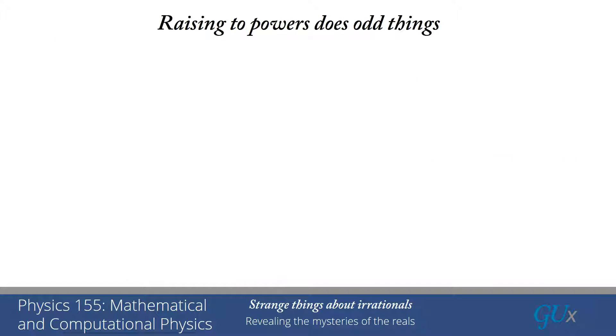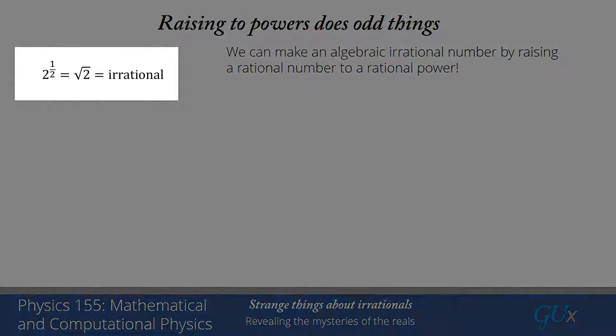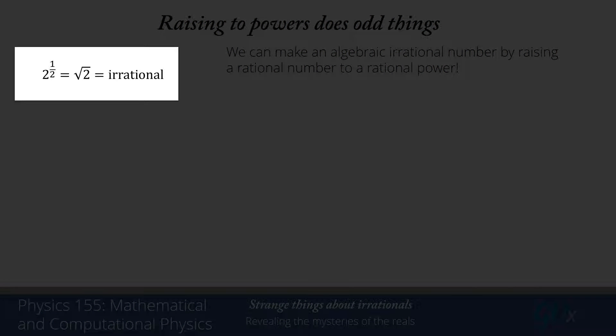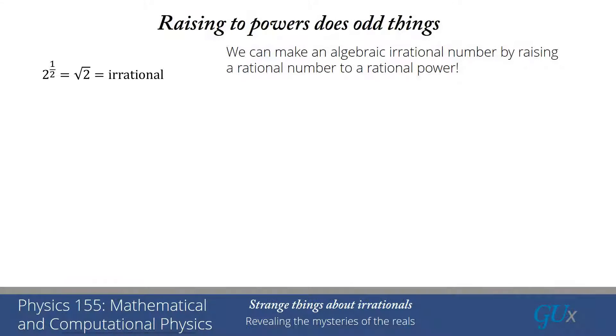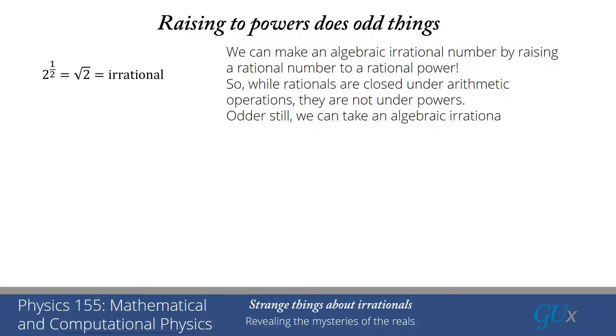Our next step is looking at what happens when we raise numbers to powers, because they tend to do odd things. We can take the rational numbers and create algebraic irrational numbers by raising a rational number to a rational power. We just gave an example of that: 2 raised to the 1 half power, where both 2 and 1 half are rational numbers, is equal to the square root of 2, and we just proved that that's equal to an irrational number. So the rational numbers, while they're closed under arithmetic operations, they are not closed under powers. Odder still, we can take an algebraic irrational number, raise it to an algebraic irrational power, and the result is a rational number.